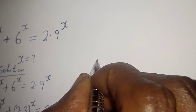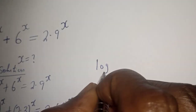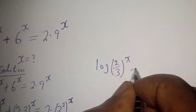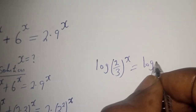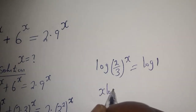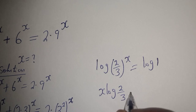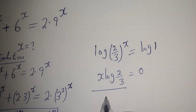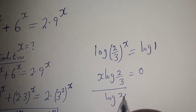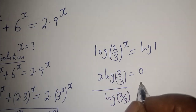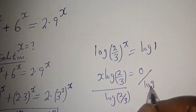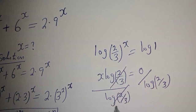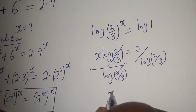Let's take the log of both sides: log of 2 over 3 to the power s equals log 1. Then s times log of 2 over 3 equals 0, since log 1 is 0. Dividing both sides by log of 2 over 3, we get s is equal to 0.